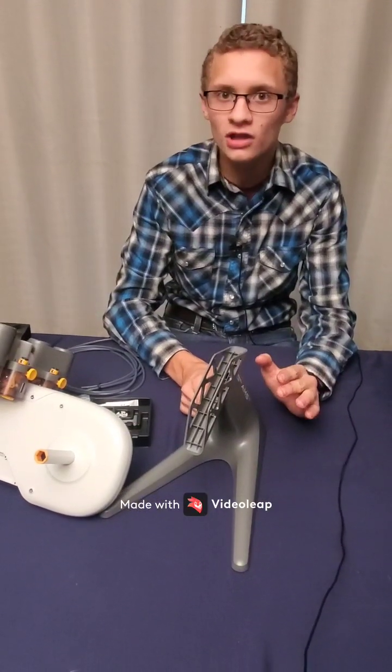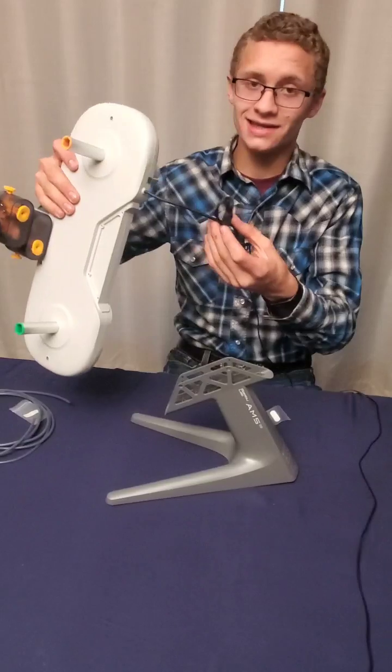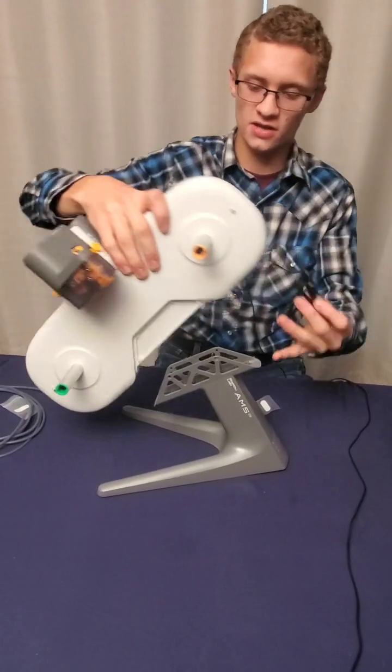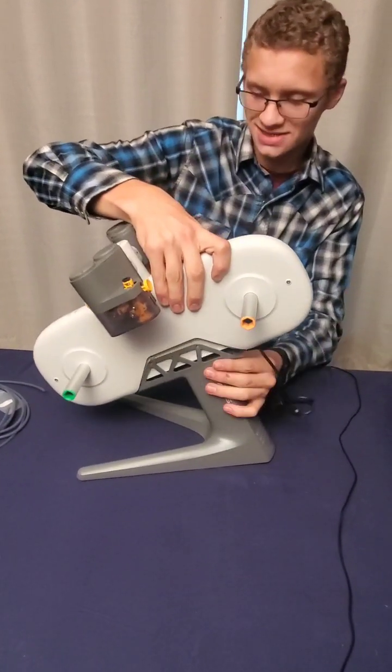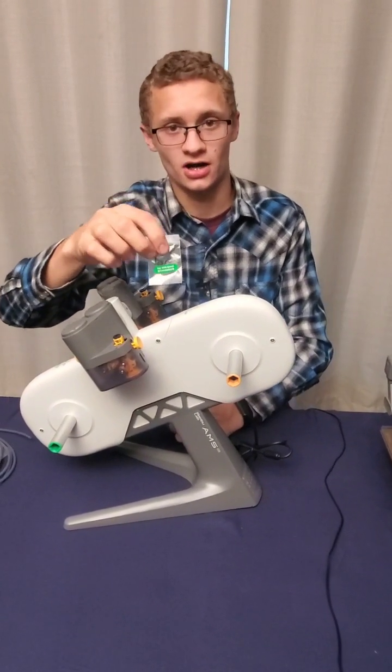Today we're going to be assembling the Bamboo Lab A1 Mini AMS. We're going to get the AMS with the cord this way and put it onto the stand, assembling it with four screws that are in the accessory box.